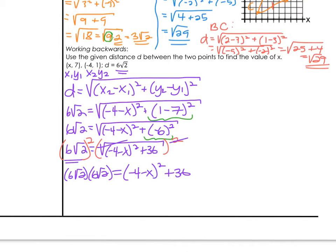On the left, we multiply outside parts with outside parts. 6 times 6 is 36. And then inside parts with inside parts. The square root of 2 times the square root of 2 is the square root of 4. On the right, we're not doing anything. Leave it alone.